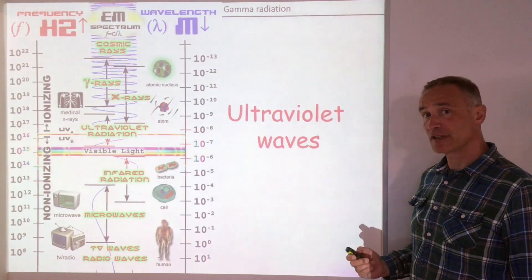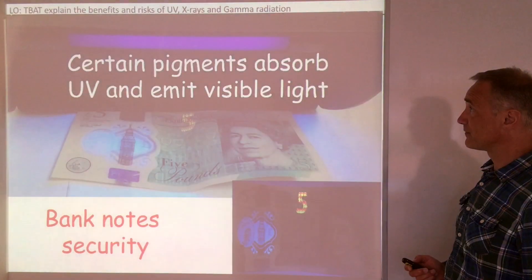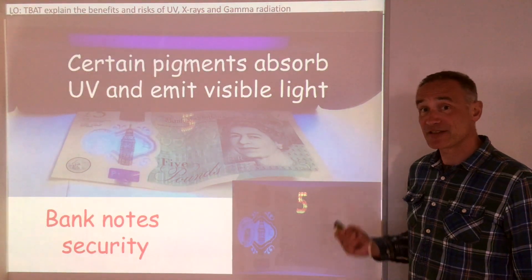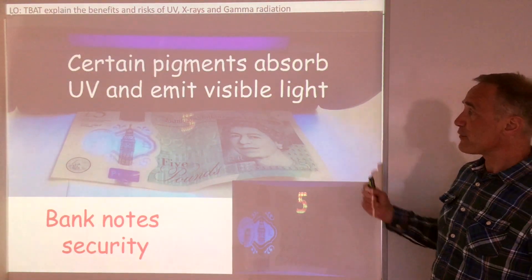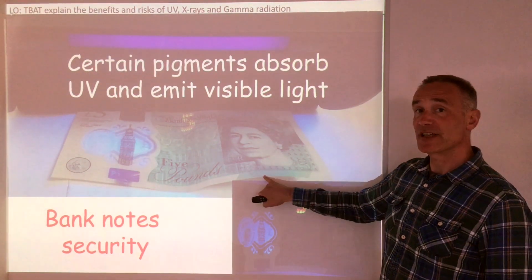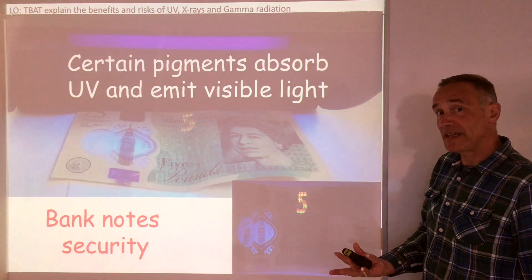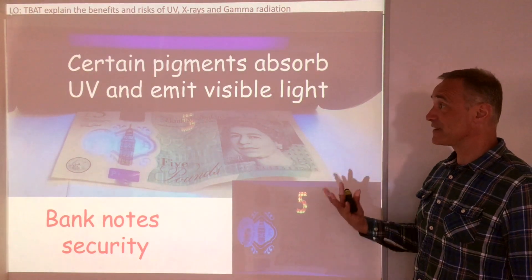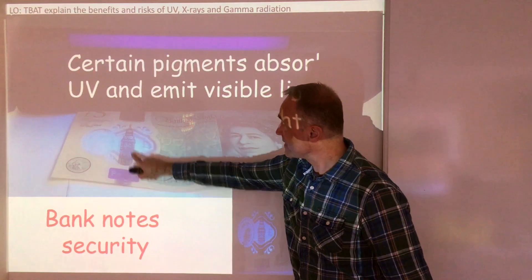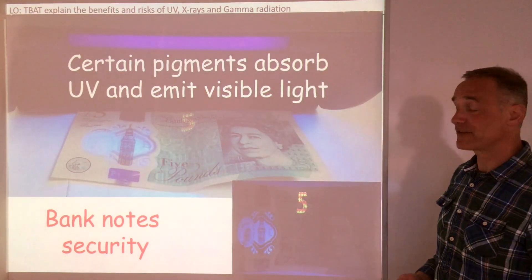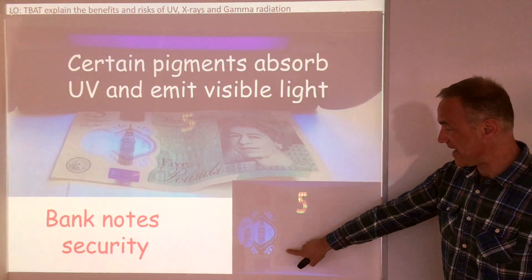Let's have a look at uses of ultraviolet waves. The first one is bank security notes. Bank security notes have pigments which absorb the UV and emit visible light. These figures can only be seen under UV light.